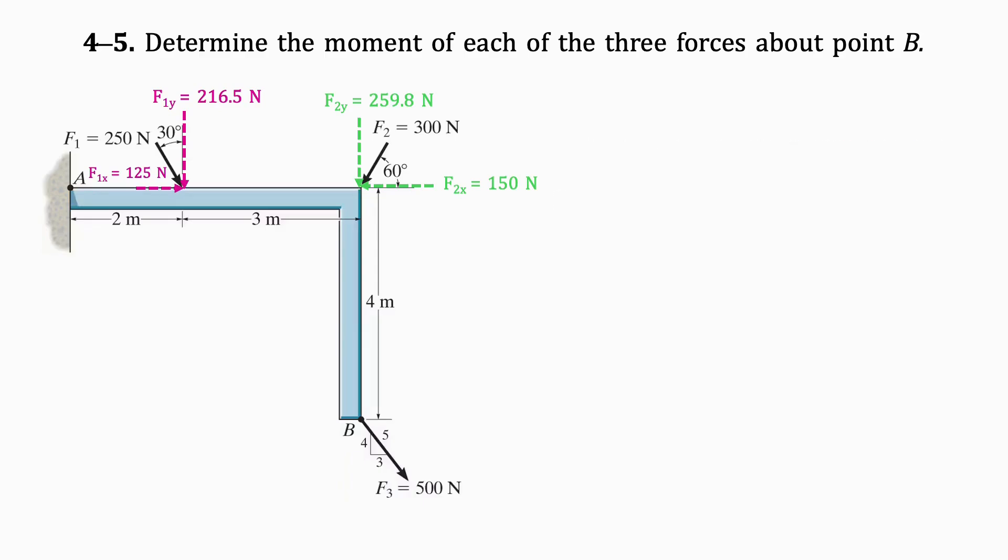Afterwards, we split F3 into X and Y components using the given angle ratio. By doing this, we get F3Y equals 400 Newtons and F3X equals 300 Newtons.